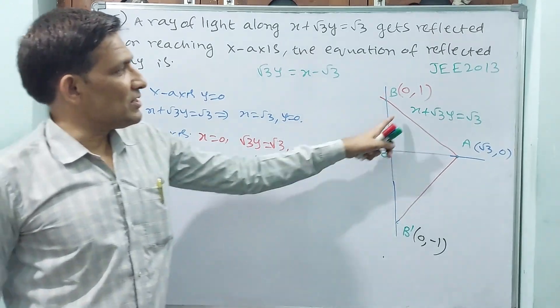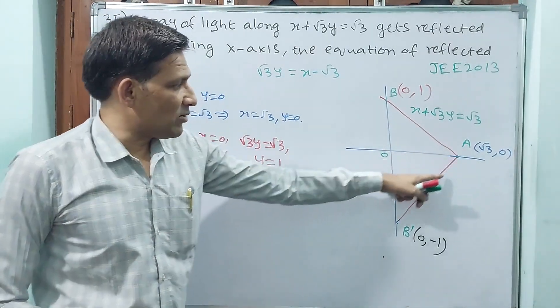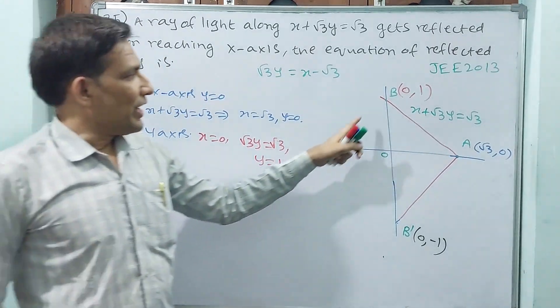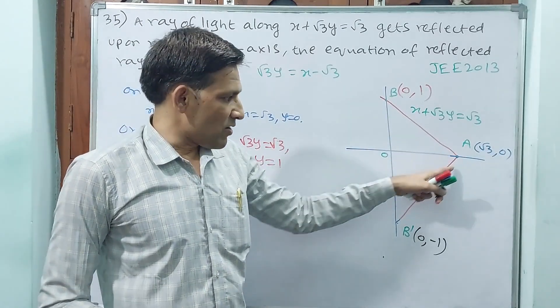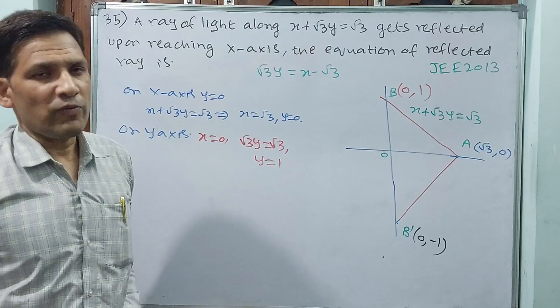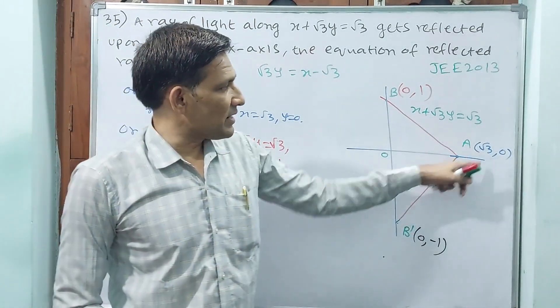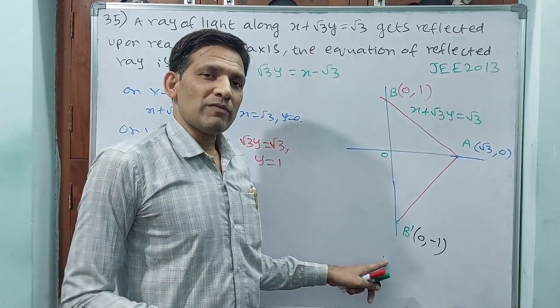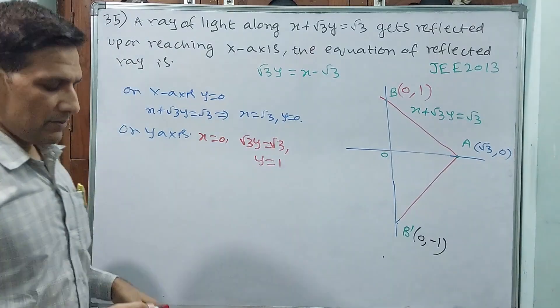Now you tell me, this is the ray of incidence, this is the ray of reflection. Ray of reflection, this line, can you find? Yes. Why? Because two points are there. Slope also you can find. Equation also you can find.